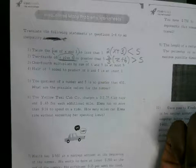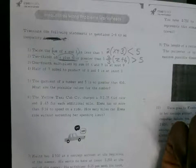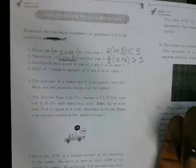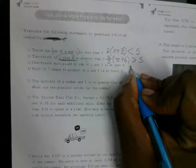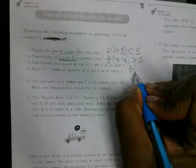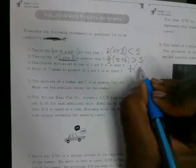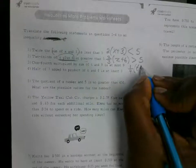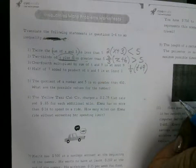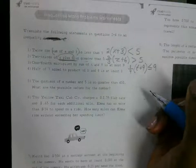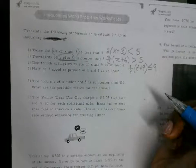Number 3: one fourth multiplied by the sum of T and 9. How would I write that? One fourth, then parentheses, T plus 9. And then 'at most 9' — what does that mean? Less than or equal to 9. That's less than or equal to 9, because it can't be over 9, but it can equal 9, because that's the most that it could be.